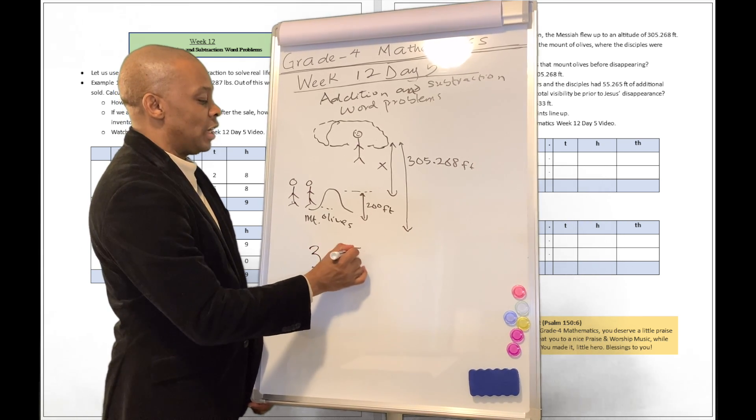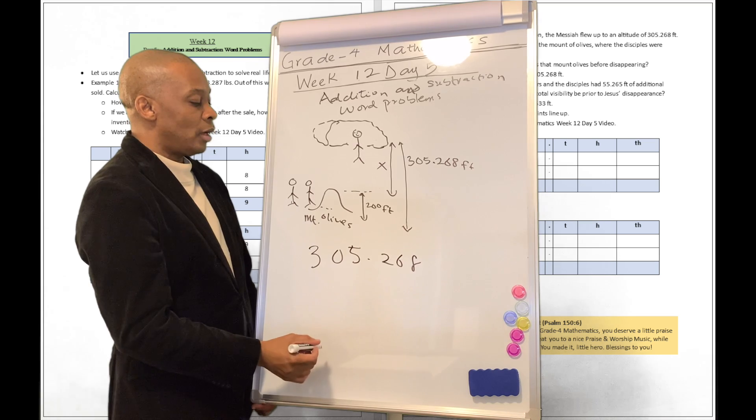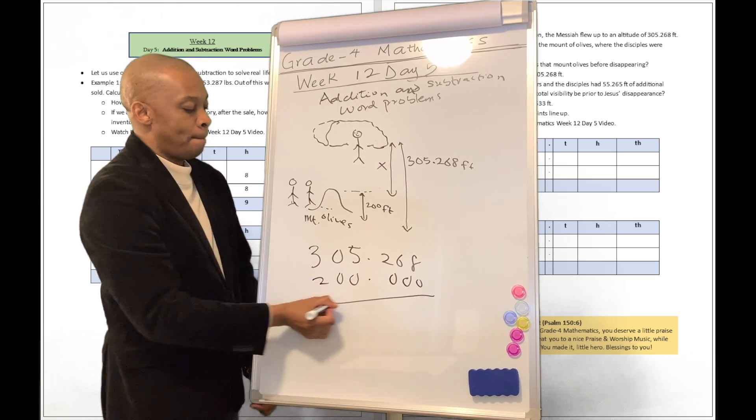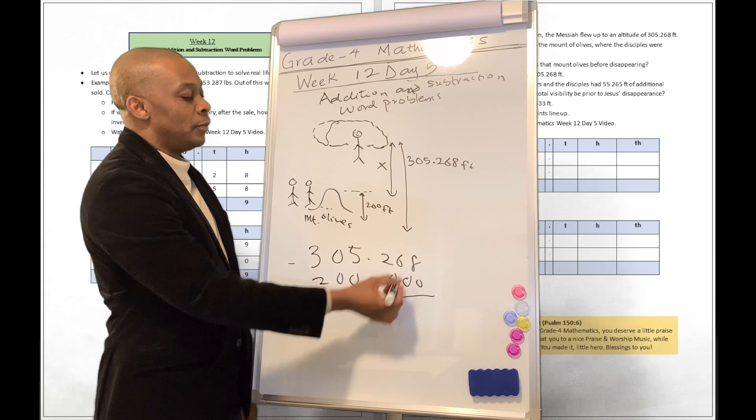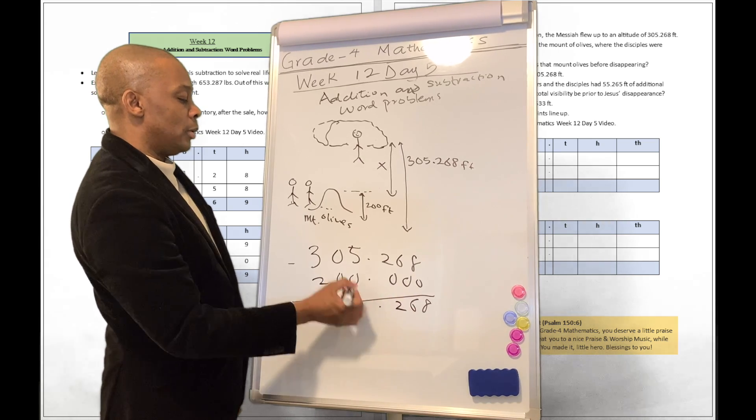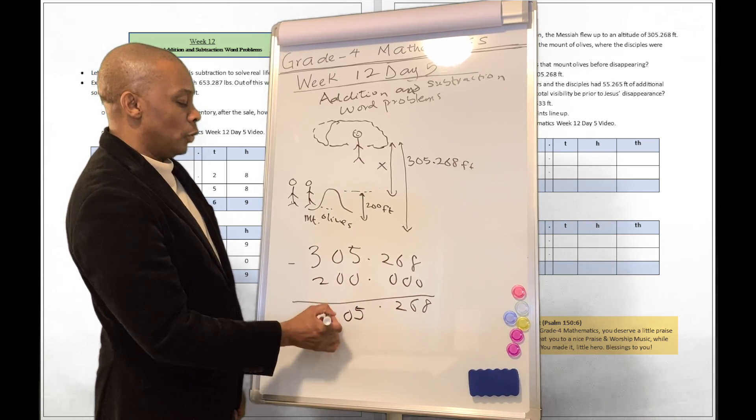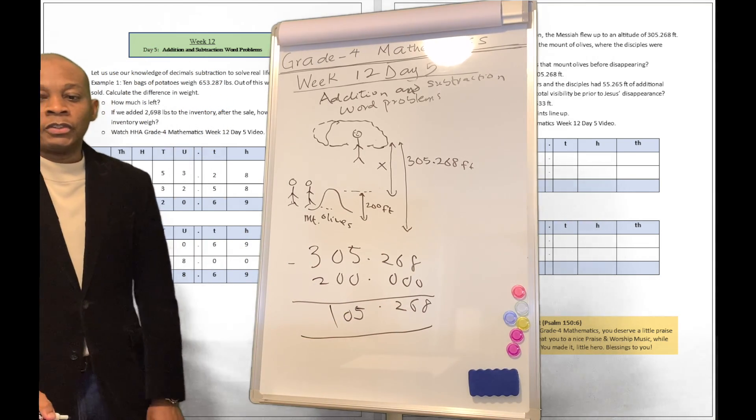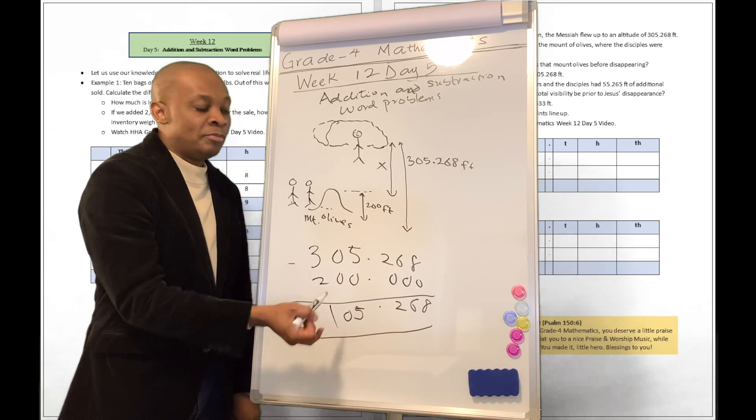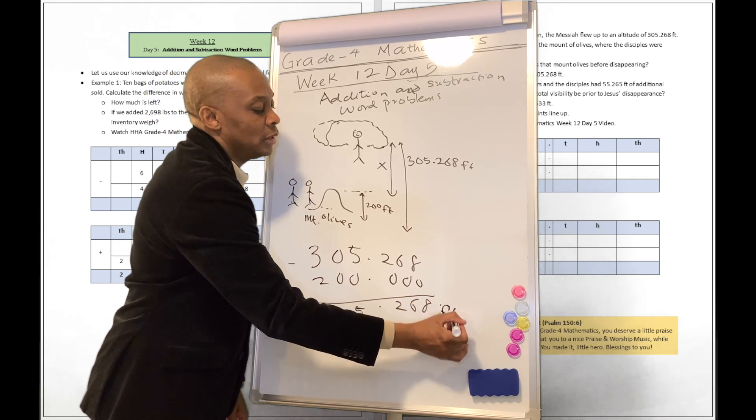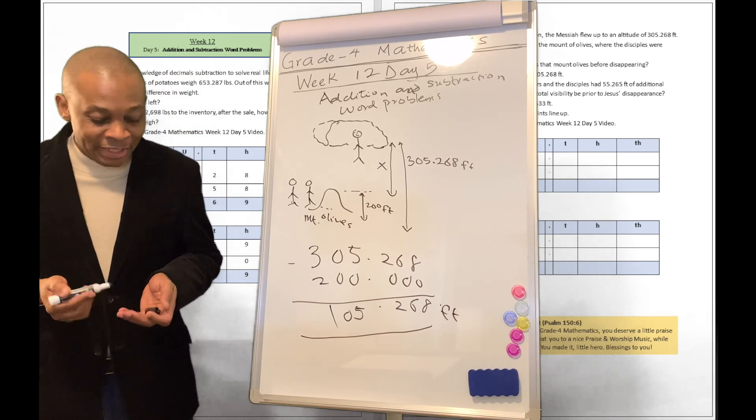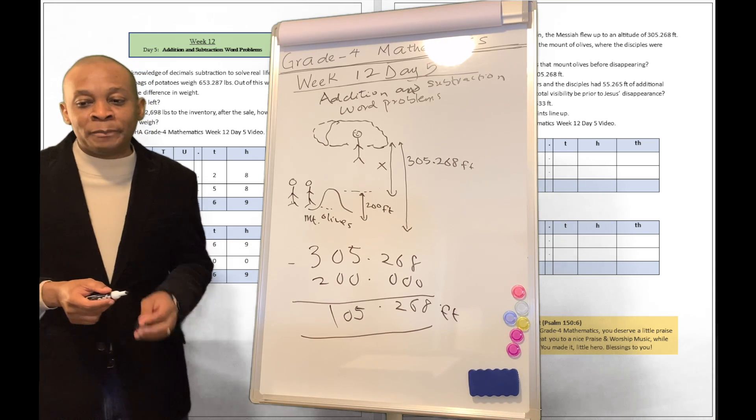So you're going to say 305.268 minus 200.00, okay? And you're going to do your subtraction like that. What is 8 minus 0? That's an 8. 6 minus 0, that's a 6. 2 minus 0, that's a 2. 5, 0, 1. Well, that's your answer right there. So Jesus flew 105.268 feet higher than the Mount of Olives before it disappeared into the clouds. Isn't that cool? That's a cool word problem over there.